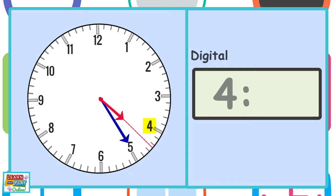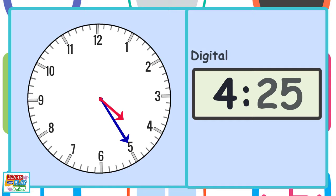Looking at the hour hand, it is past the number 4, so it is 4 something. Now I'm going to count by 5s until I reach the line at the number 5 to find out how many minutes has passed the hour: 5, 10, 15, 20, 25. So the time is 4:25.